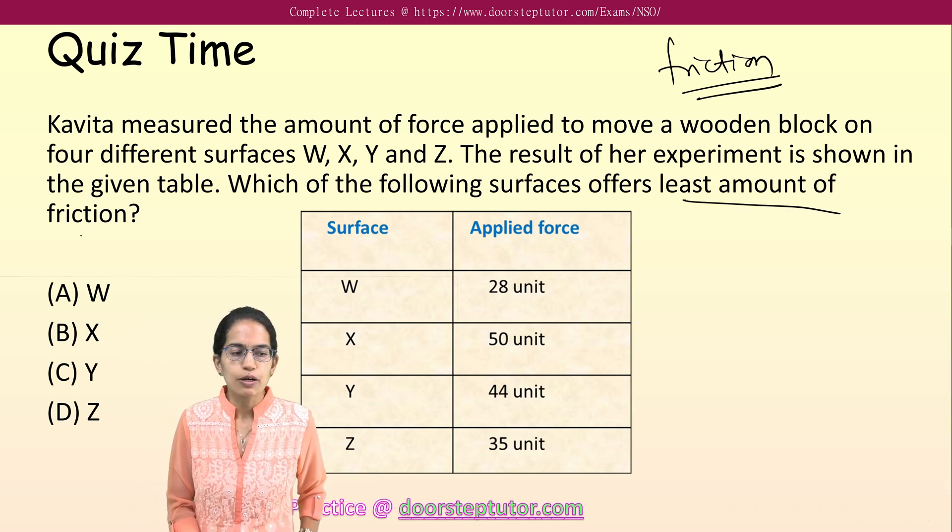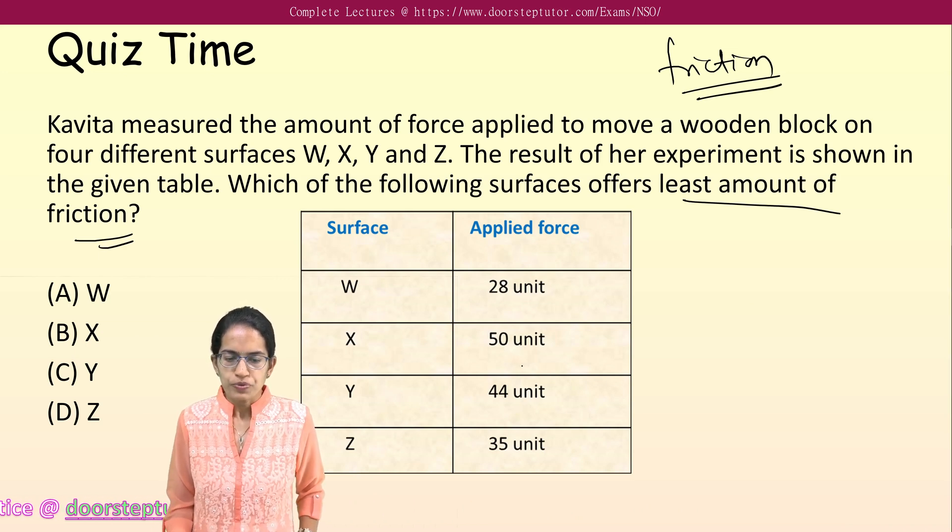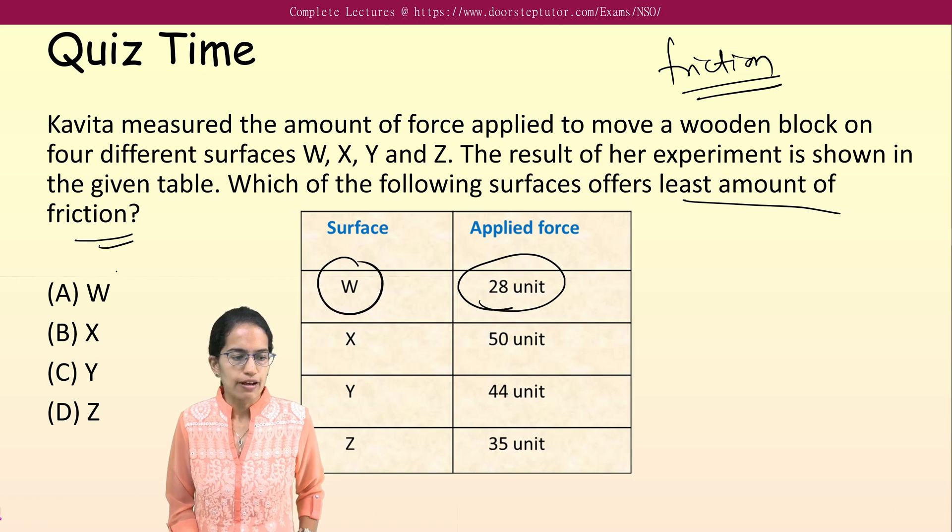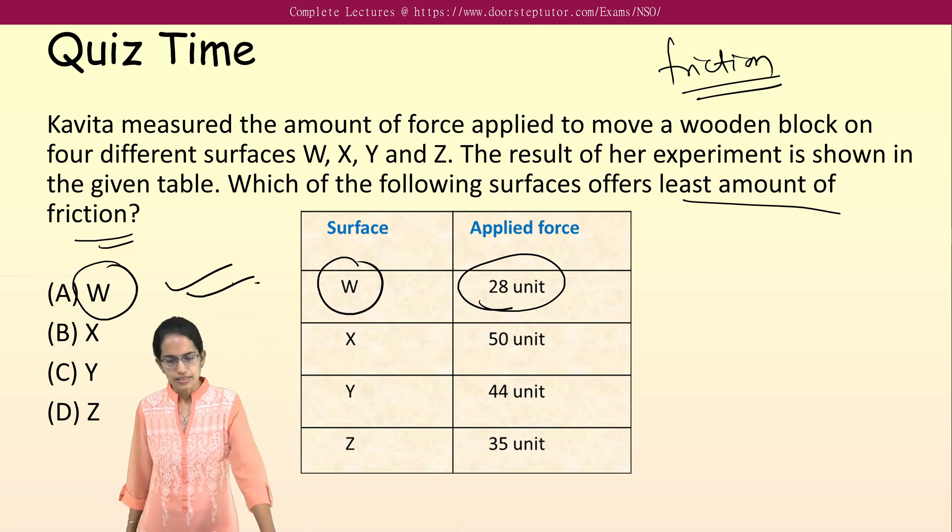Now you have to find out the least amount of friction. That means which has least amount of force among these four? We have 28 as the least amount. So W would have the least amount of friction. So A would become the right answer for this question.